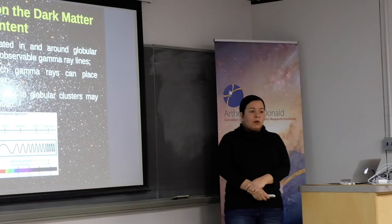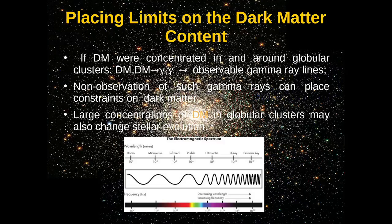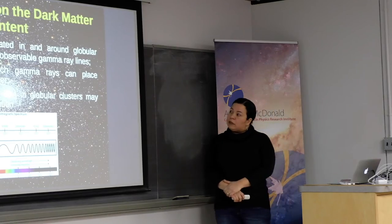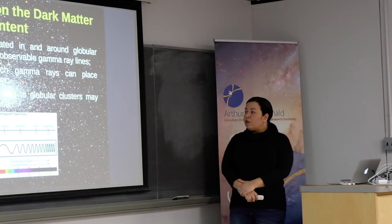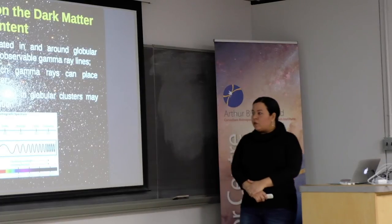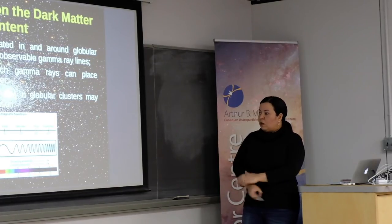We know that dark matter particles can annihilate or decay. In this case, dark matter annihilation could produce a gamma ray flux — an observable gamma ray line. If we don't observe this gamma ray line, we can place limits and constraints on dark matter. Large concentrations of dark matter could also change some stellar evolution mechanisms. While gamma ray sources are the main possibilities for discovering dark matter in this situation, we propose to study another band of the electromagnetic spectrum: radio wavelengths.